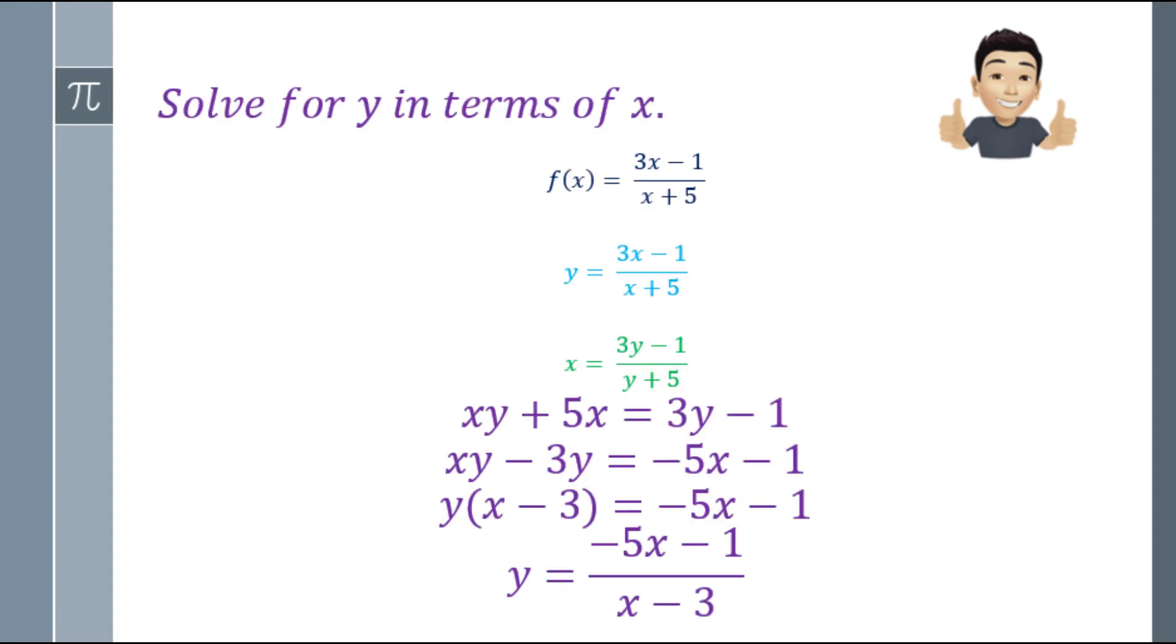And next step niyan, isolve mo na ang y. Kailangan makuha mo yung value ng y. So algebraically, cross multiply ko lang. That will be xy plus 5x is equal to 3y minus 1. Pinagsama ko lahat ng y sa kaliwa. xy minus 3y is equal to negative 5x minus 1. So factor out mo yung y. That will be y times the quantity x minus 3 is equal to negative 5x minus 1. And lastly, divide both sides by x minus 3. So that will be y is equal to negative 5x minus 1 over x minus 3.